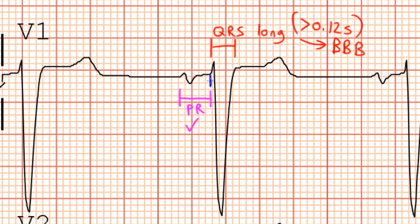And the QT interval looks normal. It's less than half of the R to R, or less than half the distance between two QRS complexes. So, the major interval abnormality here is the wide QRS, which represents a bundle branch block.